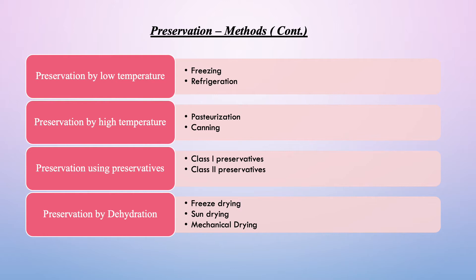The second is preservation by high temperature. It includes techniques such as pasteurization and canning. Pasteurization is a heat treatment that kills the microorganisms present in food products and is most commonly done with milk. Canning involves application of temperature to food high enough to destroy essentially all microorganisms present, plus airtight sealing in sterilized containers to prevent recontamination.